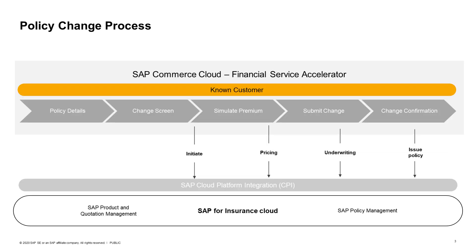On this diagram we can see the integration flow. The policy change can be initiated for effective policies from SAP Commerce Financial Services Accelerator by using OCC APIs. Once the process is started, the customer can specify the desired change and then be presented with a simulated premium provided by SAP Product and Quotation Management. The policy change can be submitted or cancelled in case the simulated premium does not match the customer's expectations.